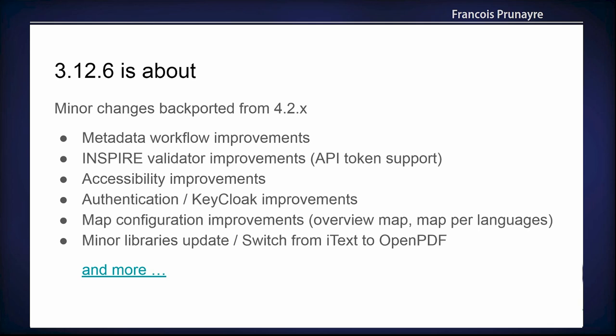Michele Gabriel, also a committer in GeoNetwork from GeoCat, is working a lot on accessibility and there will be a talk on this later. We are also adding support for new authentication systems. Keycloak and OpenID are something contributors are working on, as well as improving how you configure maps in multilingual catalogs — for example, having specific maps depending on language. In 3.12 we also do security updates and update libraries when we can.